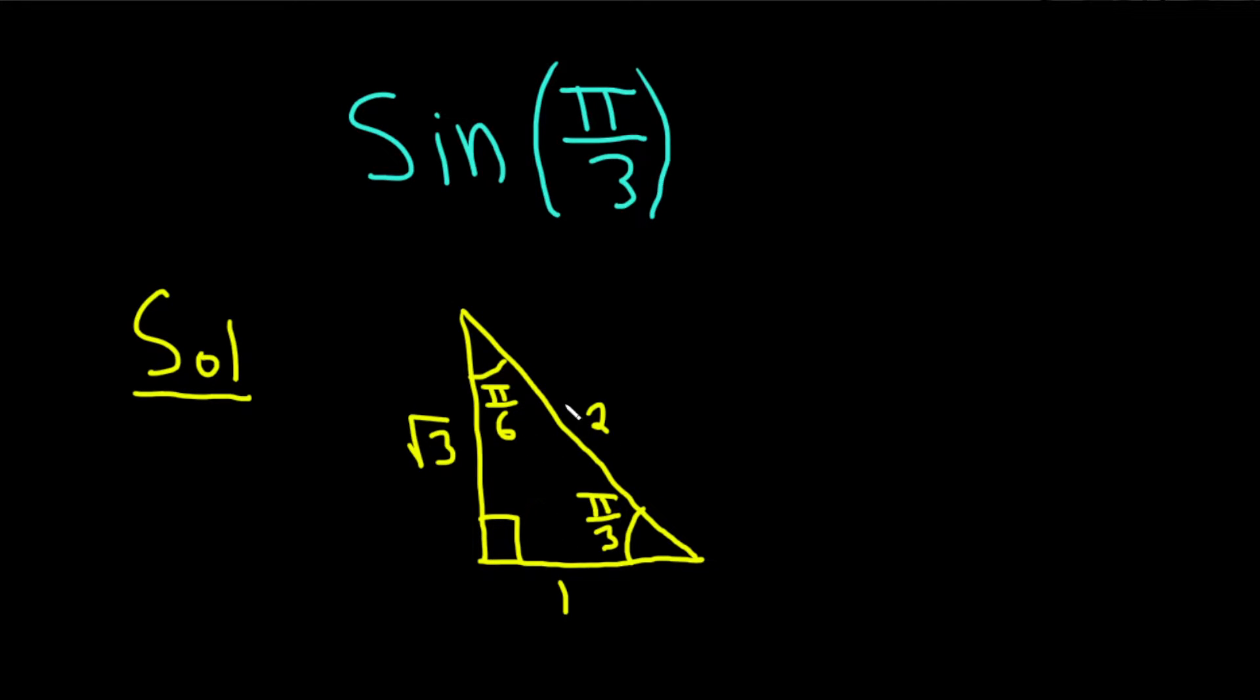If you memorize this triangle, you can compute the sine of pi over 3, the cosine of pi over 3, etc. You could use this triangle together with the following.